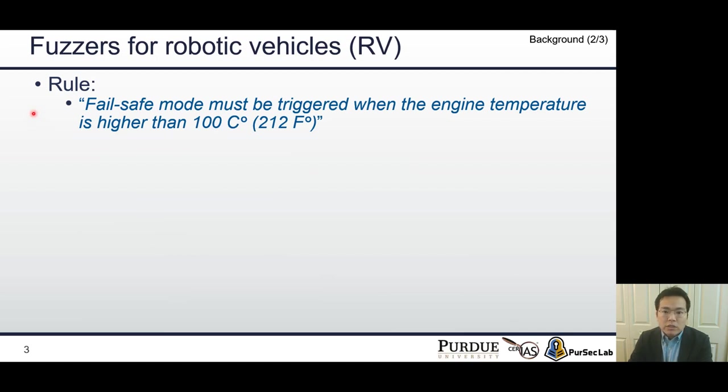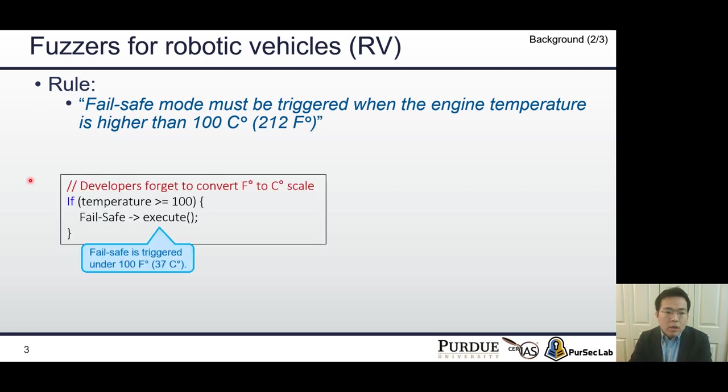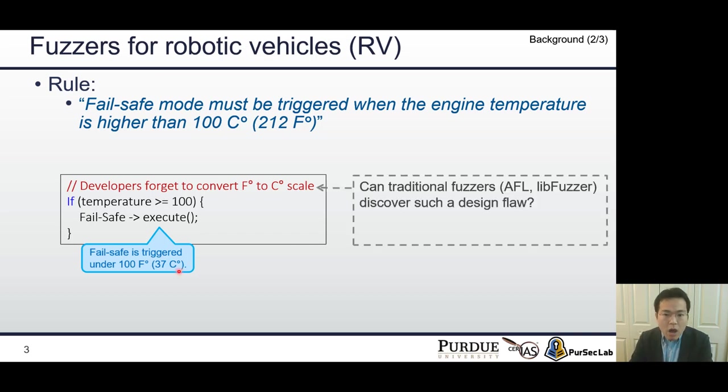Let's consider a simple logic bug in cyber physical systems. For example, failsafe mode must be triggered when the engine temperature is higher than 100 Celsius degrees. However, let's assume developers forget to convert Fahrenheit to Celsius scale. In that case, the CPS triggers the failsafe even though the current temperature is only 37 Celsius degrees. So how can you find such a design flaw in software?